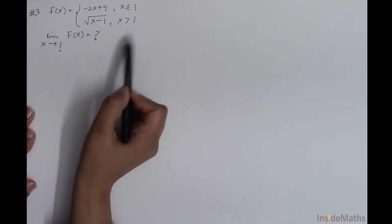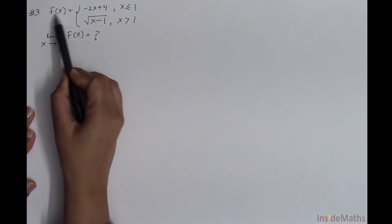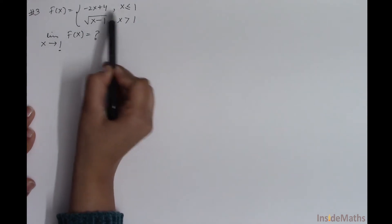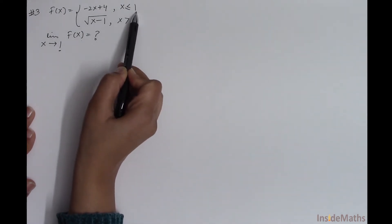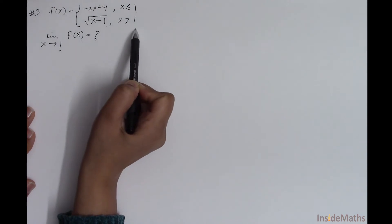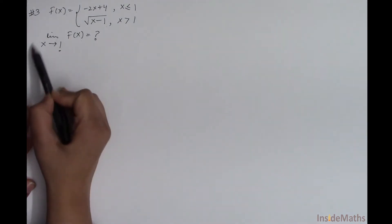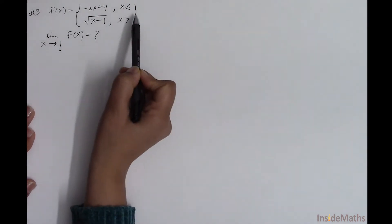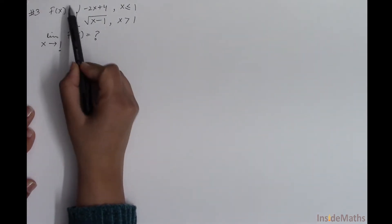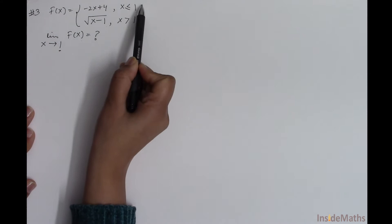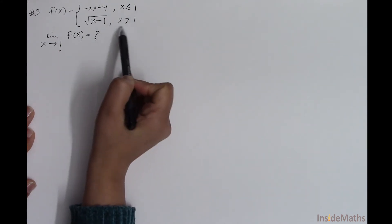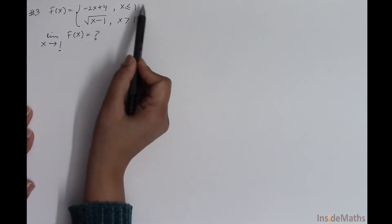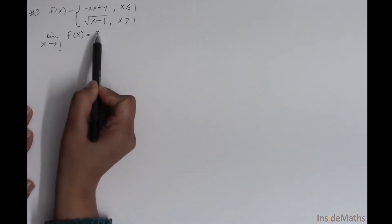The next example involves a piecewise function: f(x) = -2x + 4 when x ≤ 1, and √(x - 1) when x > 1. We have to find the limit as x approaches 1 of f(x). Since f(x) is defined differently on each side of x = 1, we solve the left-sided and right-sided limits separately.